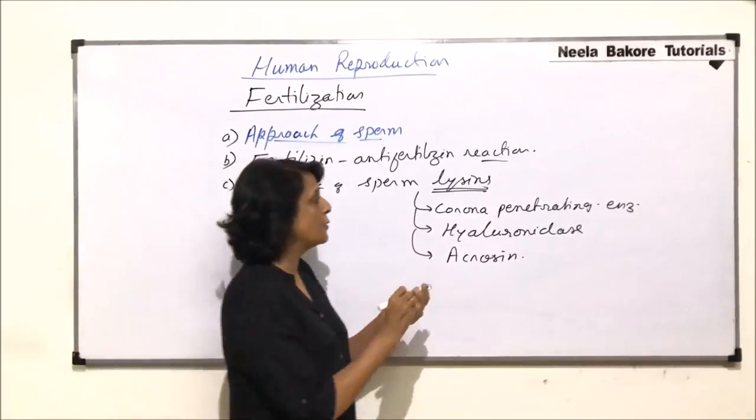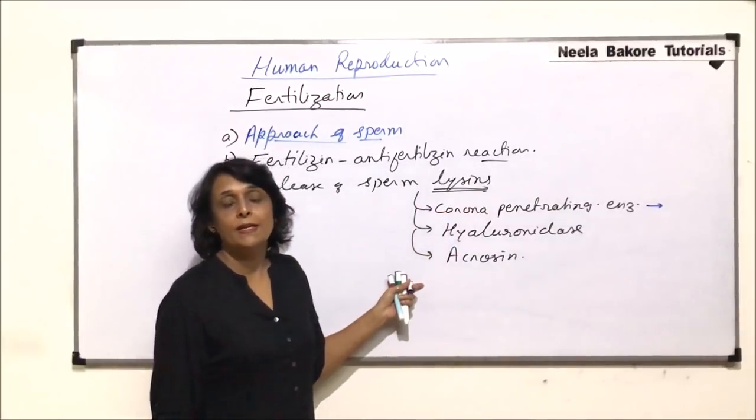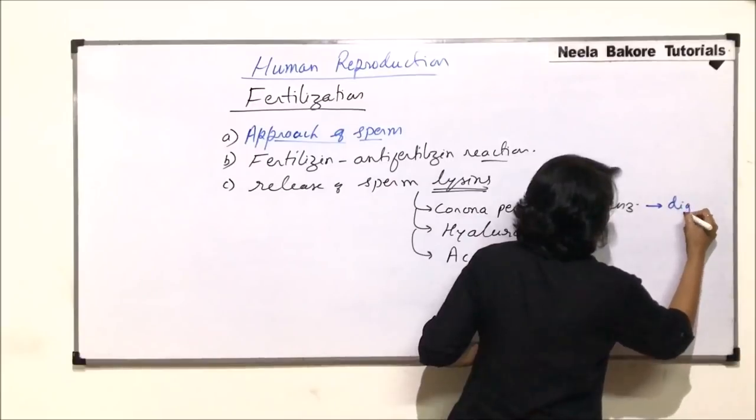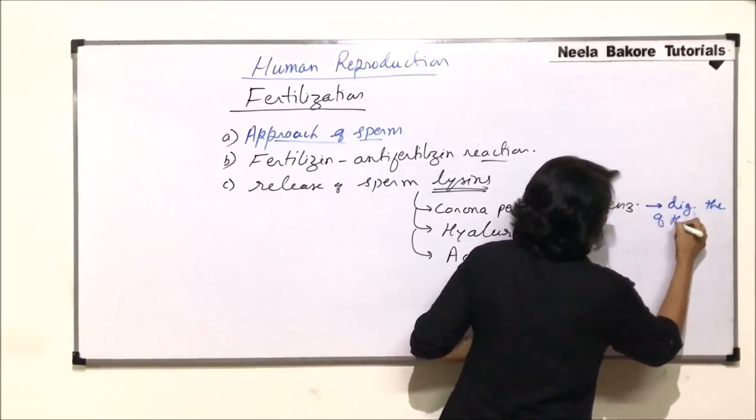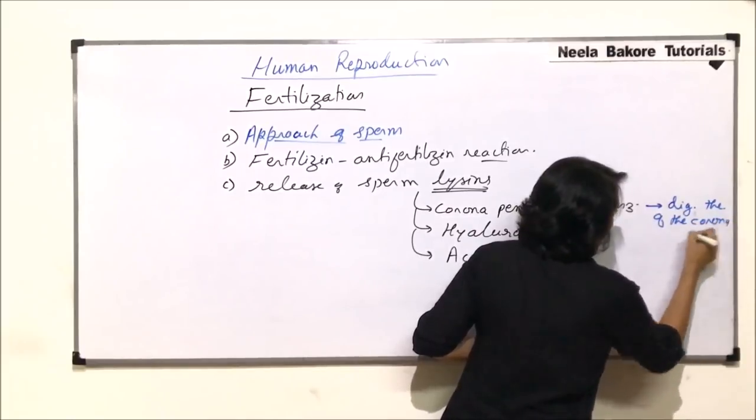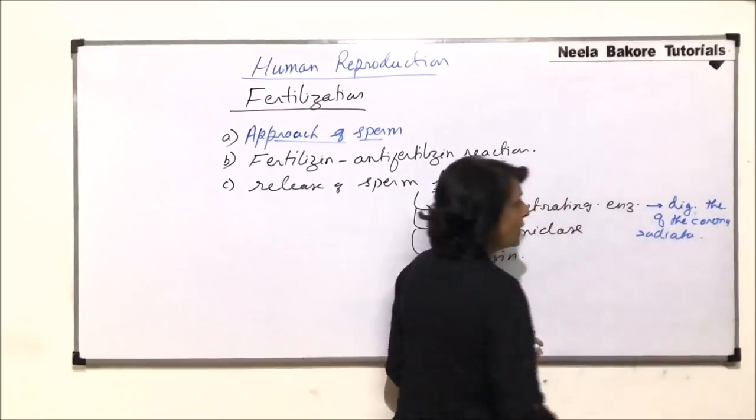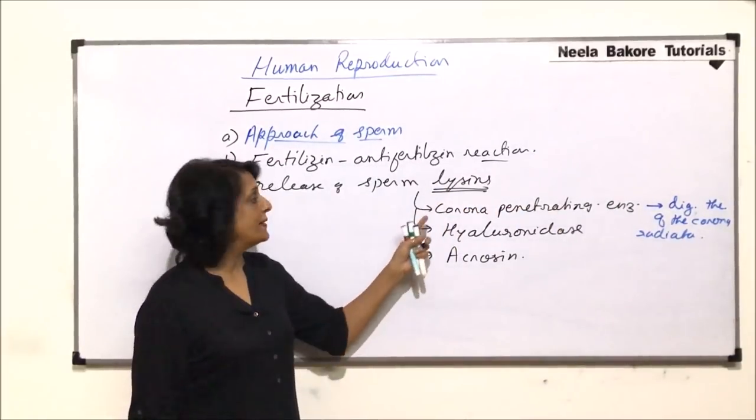Let us write down their function and then we will see what they do. First one, that is corona-penetrating enzyme or corona-digesting enzyme, digests the cells of the corona-radiator layer.